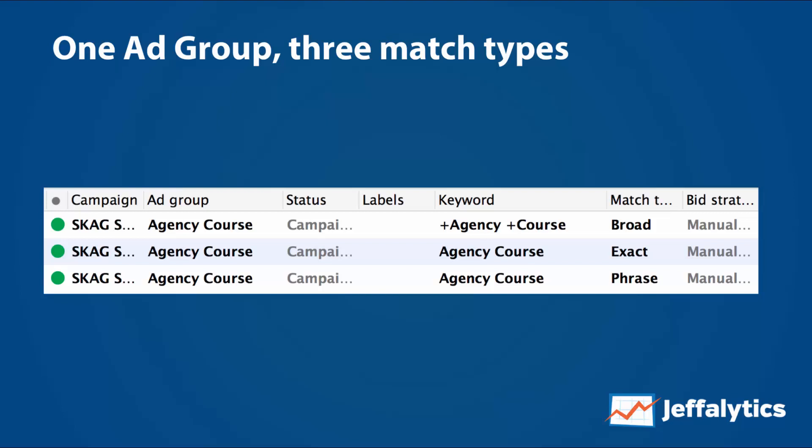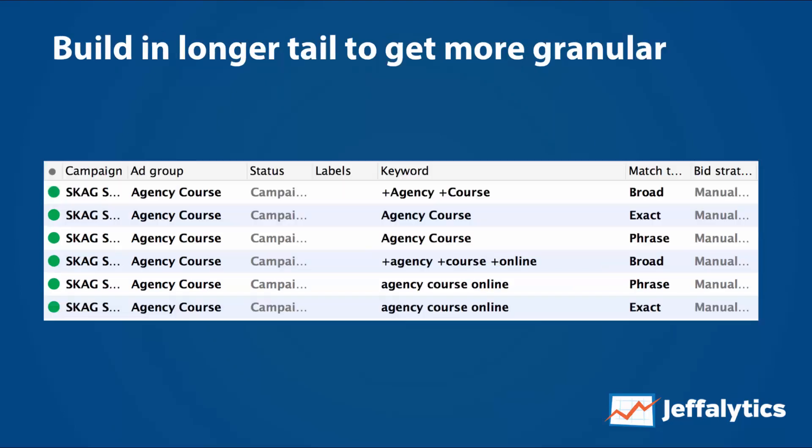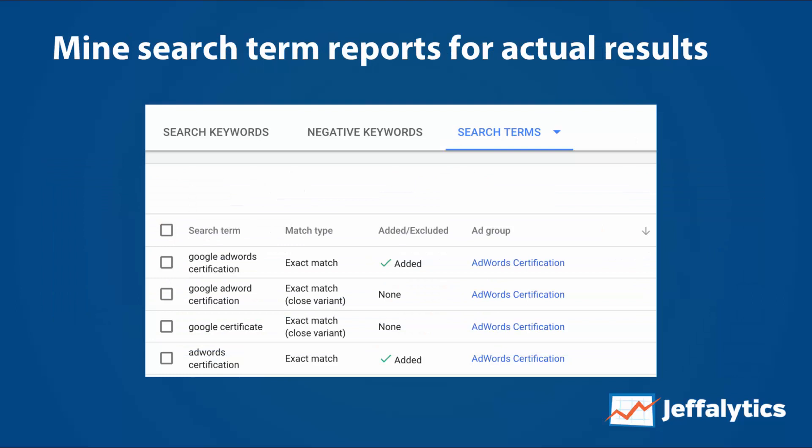Basically, if I'm going to have an ad group about the agency course, all my keywords need to be tightly related. As you go forward, you can build out longer tail terms inside this single keyword ad group to get more granular. I might add the modifier 'online' to see if anyone's looking for an online version. You don't just stop at six words — you might put in 60 or 600 variants. I'd recommend starting in a more manageable way and then mining your search term reports to see actual results.